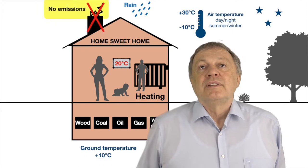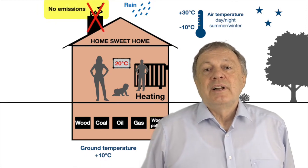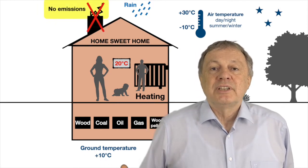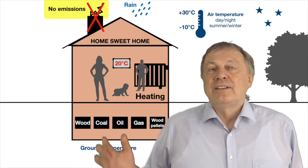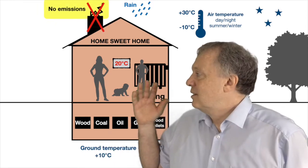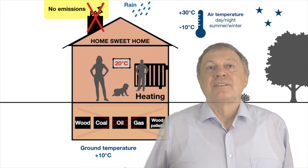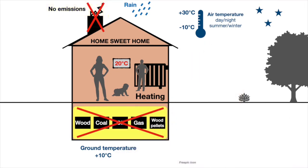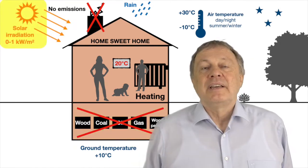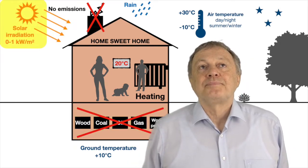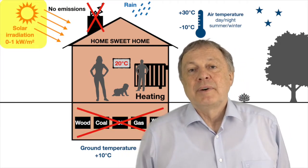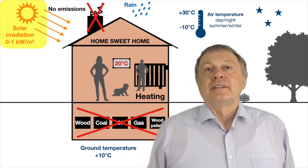So what to do in future? The future is to have no emissions at all, to use no fuel at all, and to use only the Sun as primary energy. This lecture is about how to do that.